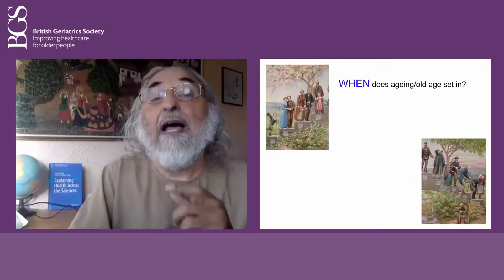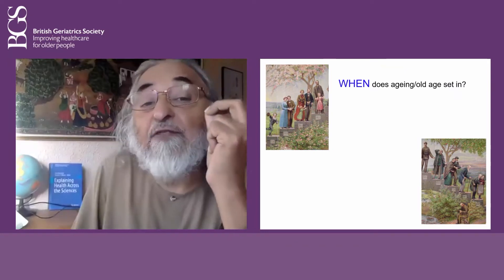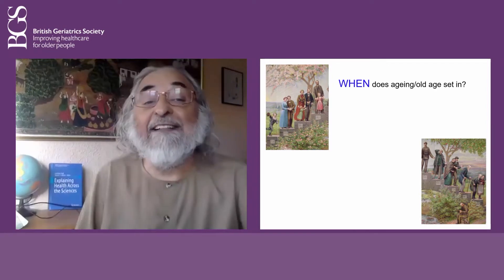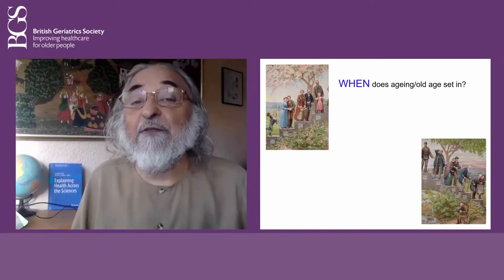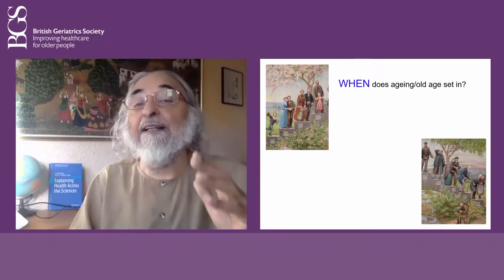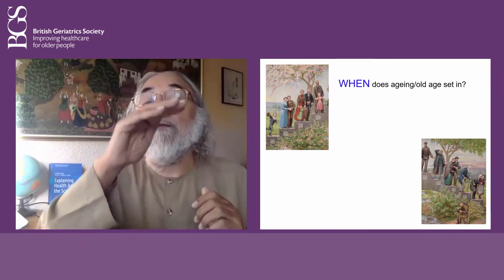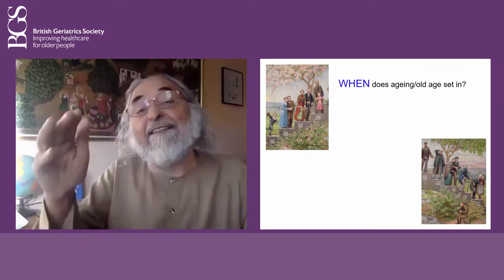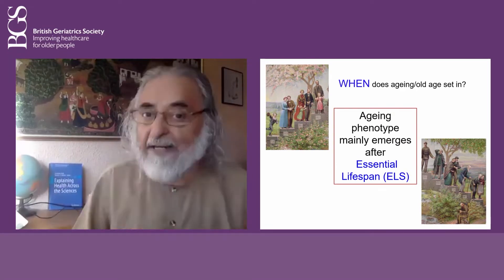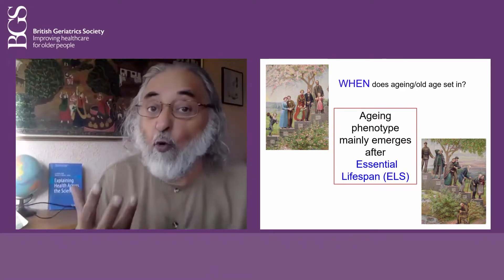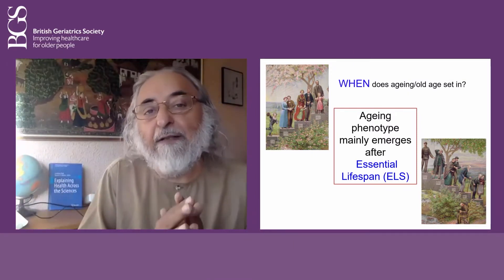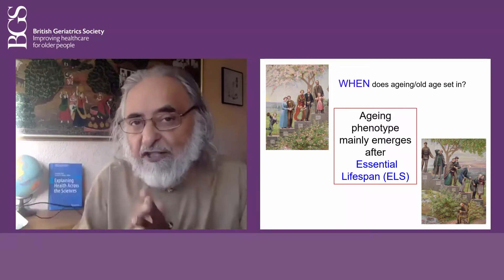The question for a biologist is: when does aging set in? The earlier painting can be divided into two parts — one part going upward where children are growing up, reaching maturity, and another downhill path. We call this the aging phenotype; the way we understand aging of old age basically manifests itself during the period of life after essential lifespan.